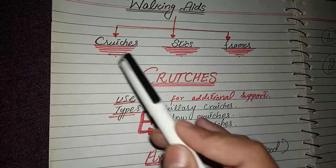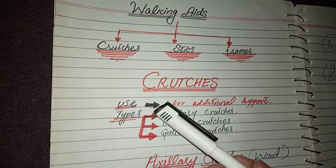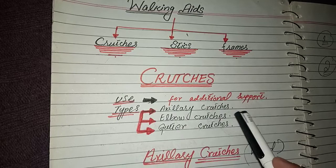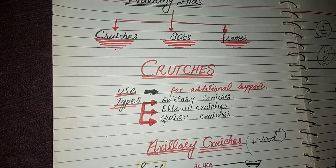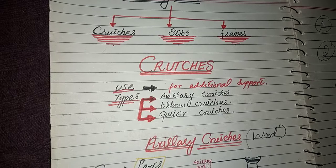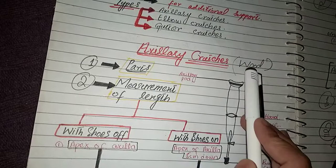Now we talk about crutches. The different types of walking aids are crutches, sticks, and frames. Crutches are used for additional support. There are different types of crutches: axillary crutches, elbow crutches, and gutter crutches. There are different types due to requirements, as there are different needs and requirements for individual patients.